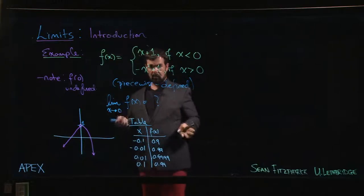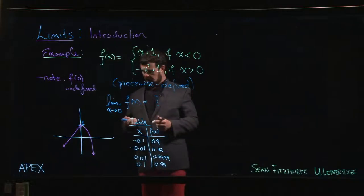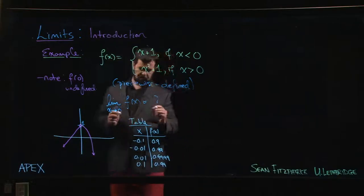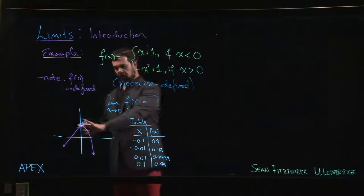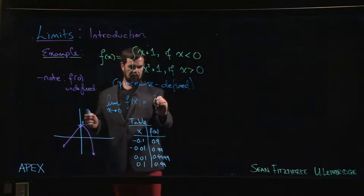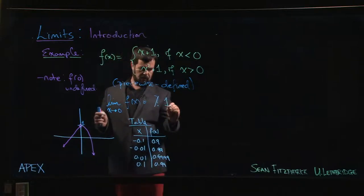Certainly we are seeing values for f of x, y values, getting close to one. The closer I take x to zero, the closer f of x is going to get to one. So I think it's fair to say, looking at either the graph or looking at the values, that the limit in this case should be one.